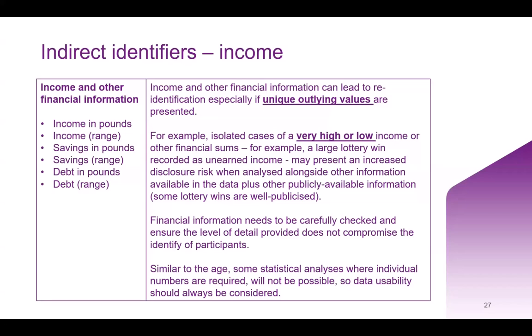Turning to income and other financial information — especially when unique outlying values are present — this can easily increase the risk of re-identification. Key examples are either very high or low incomes. A more specific example could be providing information about a large lottery win recorded as unearned income. This may present an increased disclosure risk when analyzed alongside other available information plus publicly available sources — for example, some lottery wins are very well publicized and you can read about them in the newspaper, potentially allowing re-identification.